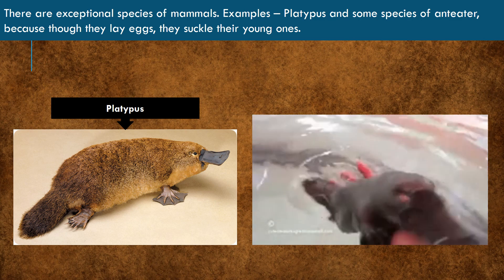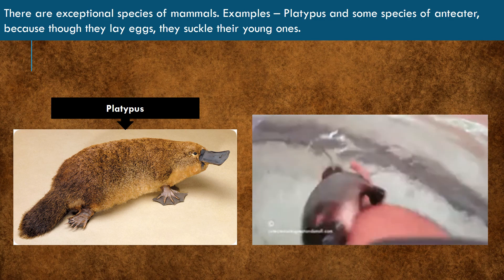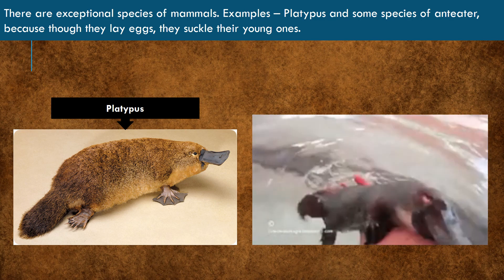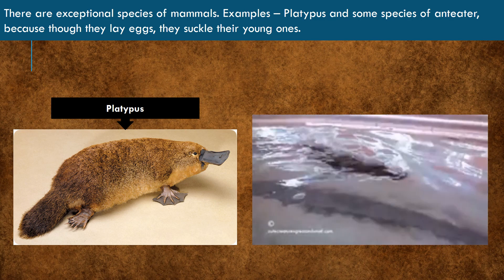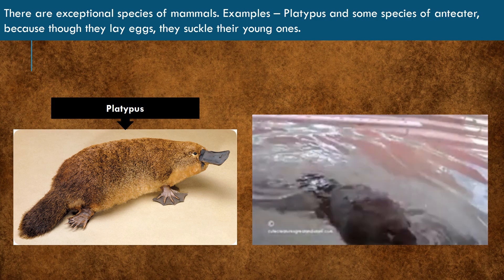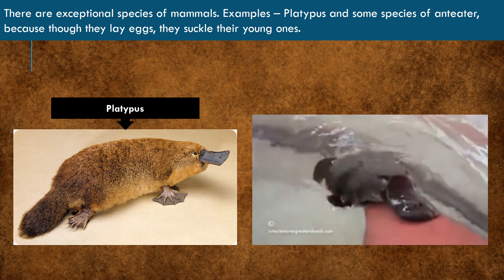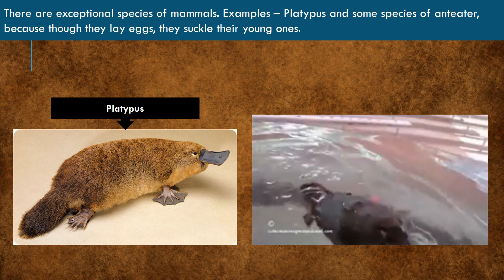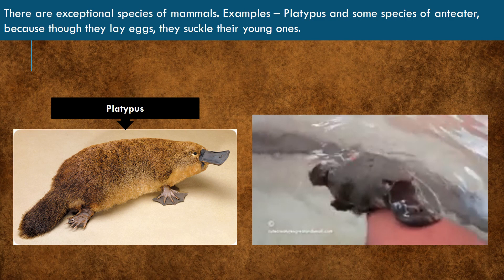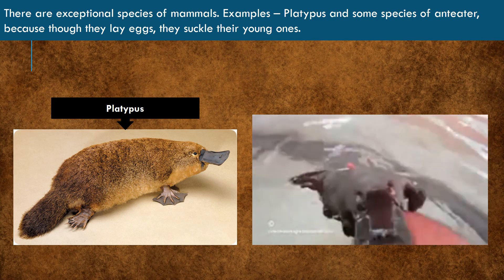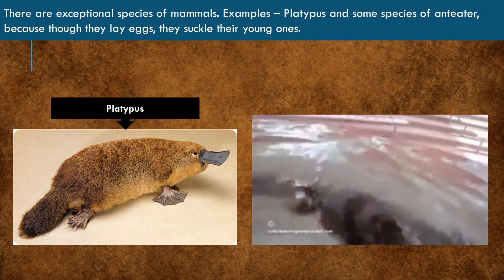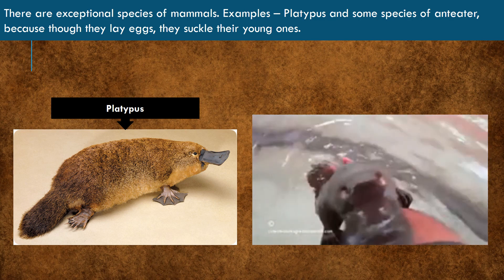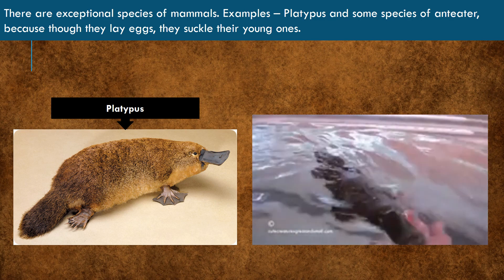Platypus mostly live underwater. Anteaters: as these animals eat ants and termites, they are called anteaters. They have no teeth. Their long tongue helps them to lap up ants and termites.